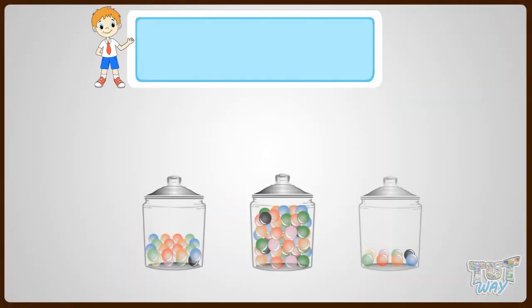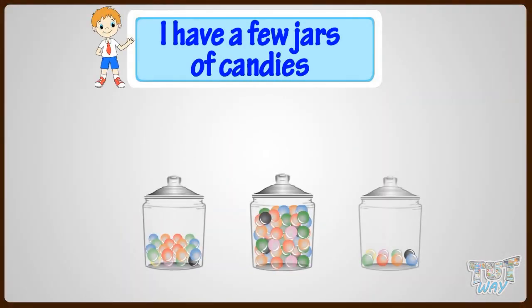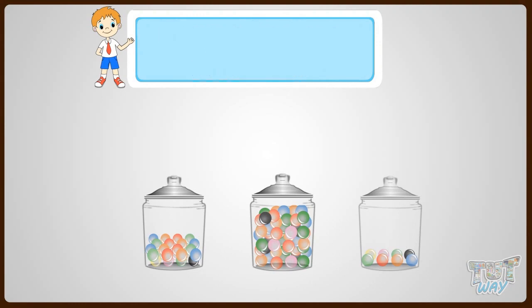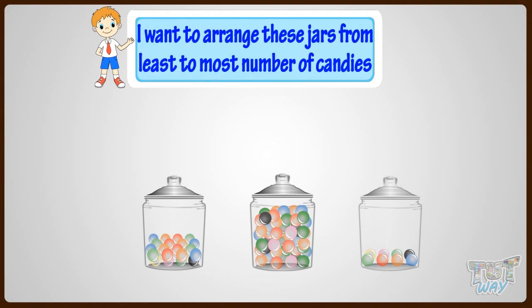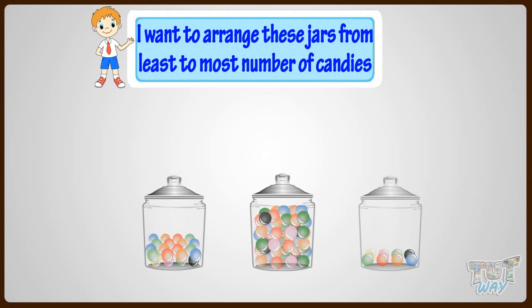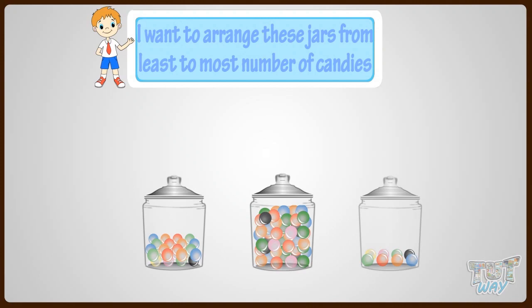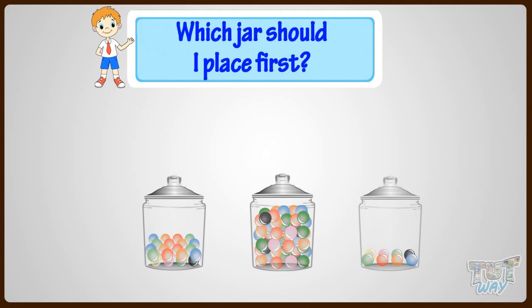I have a few jars of candies. I want to arrange them where the jar with the least number of candies comes first, and the jar with the most candies comes last. Which jar should I place first?